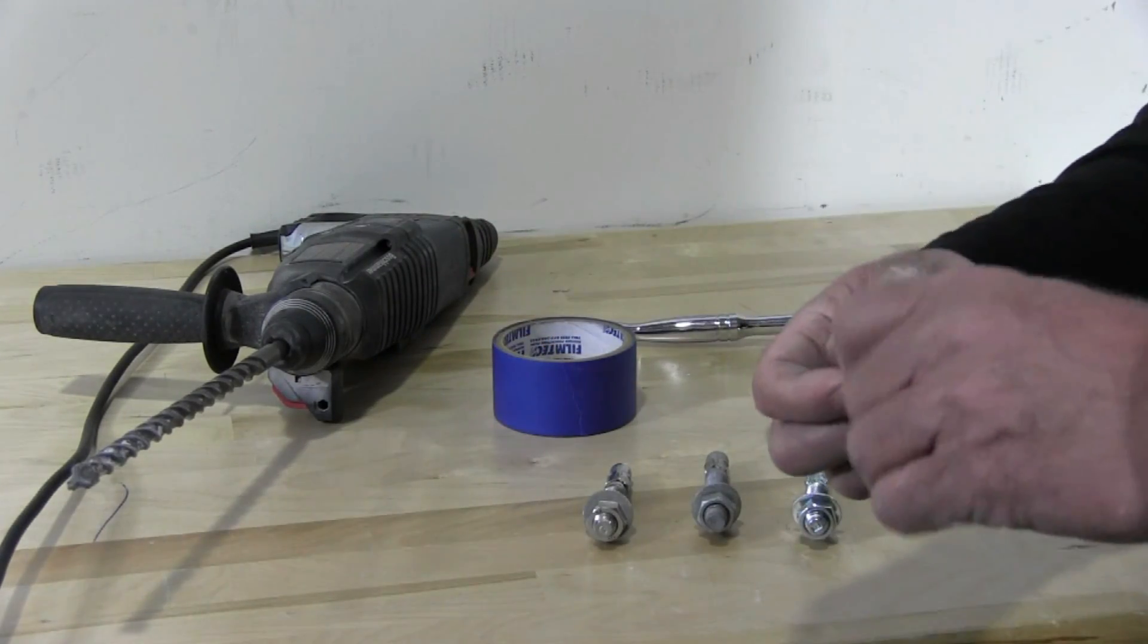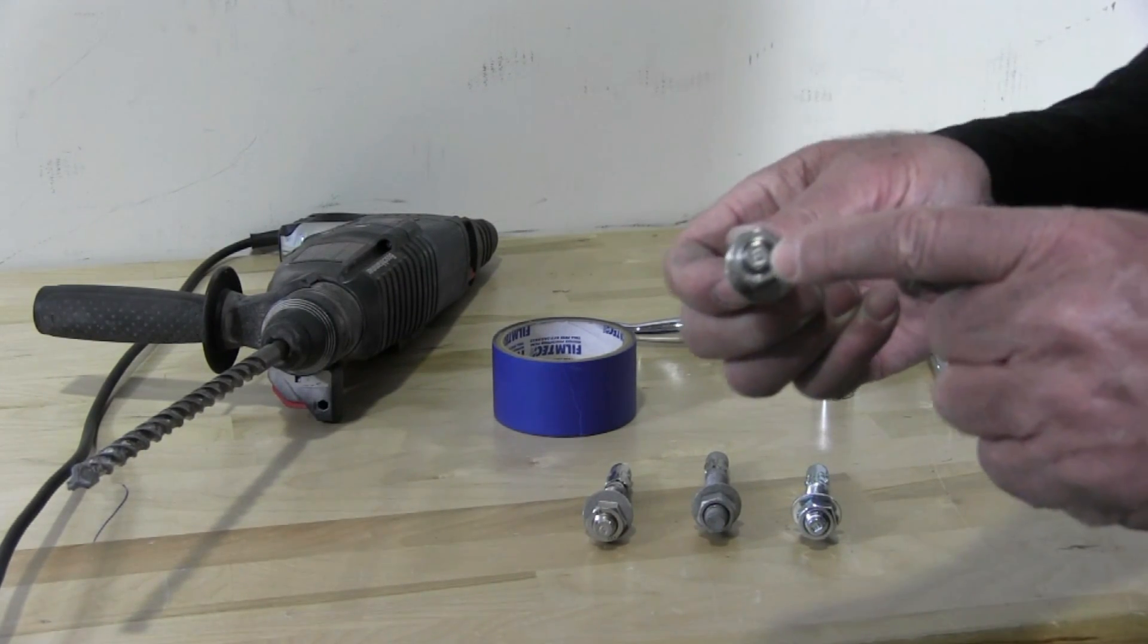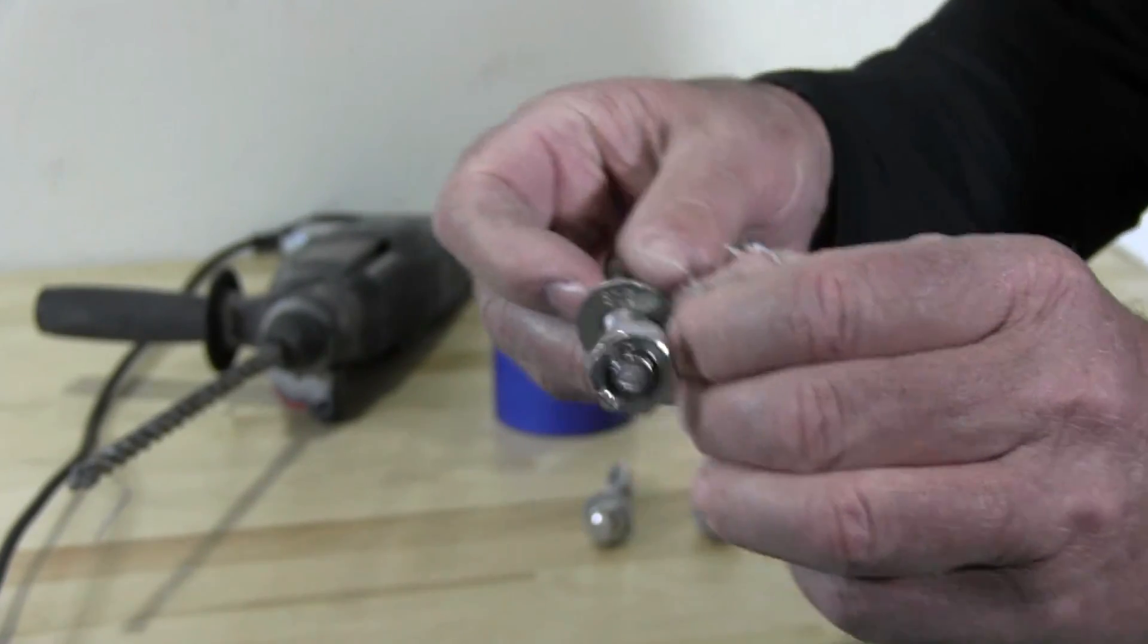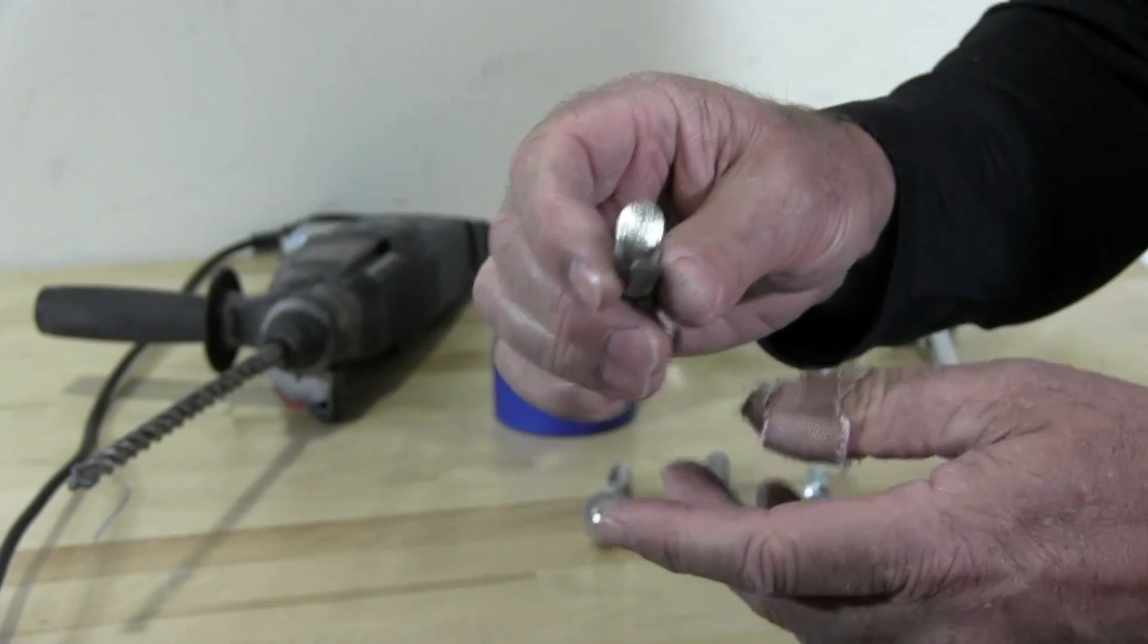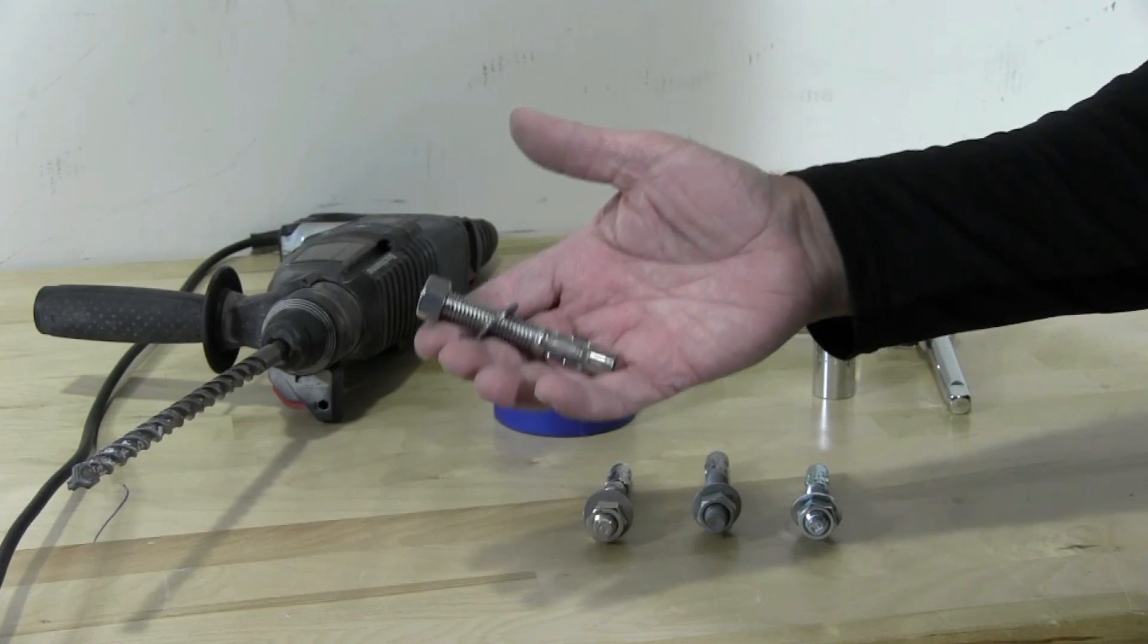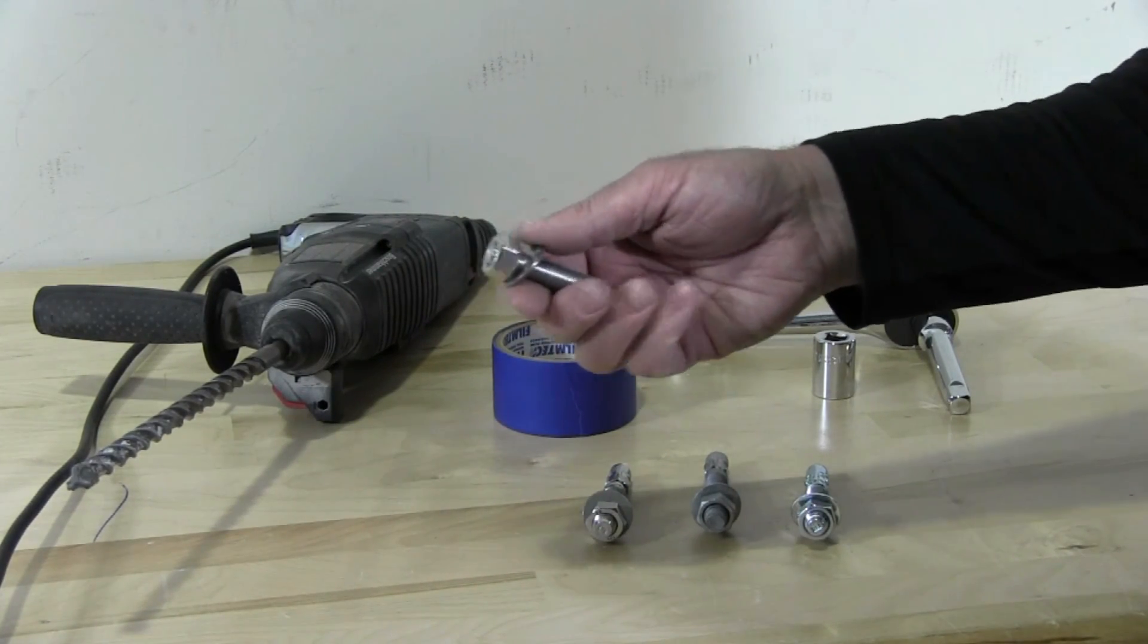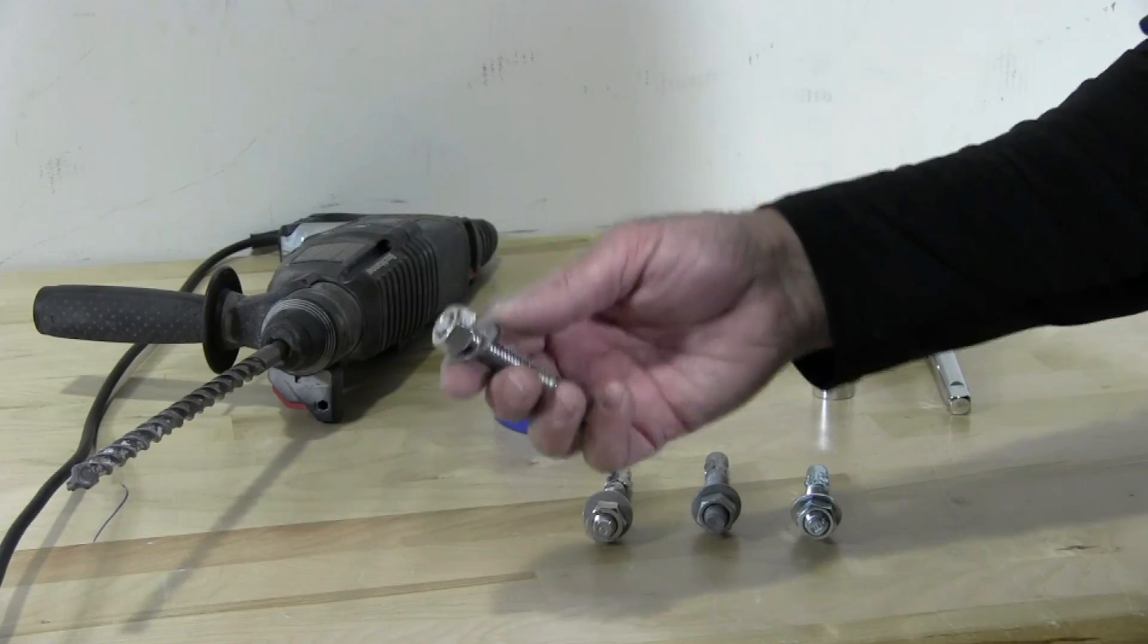316 stainless is marked as 316. You'll find it marked on the nut, on the washer, and you'll see a marking on the bottom of a 316 stainless wedge anchor. These wedge anchors can be used in salt water applications such as docks, decks, or a boardwalk, anywhere you have an application where you're using salt water.